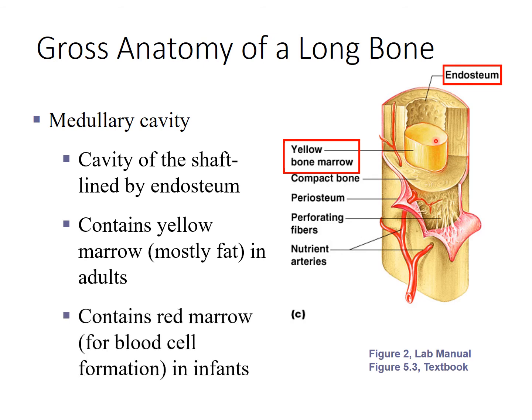Now, in an infant or a small child, this yellow marrow would instead be red bone marrow, where red blood cells and white blood cells would be actively formed. As a child ages, most of the red bone marrow in the long bones is replaced with yellow marrow, but in an infant this would all be red bone marrow.